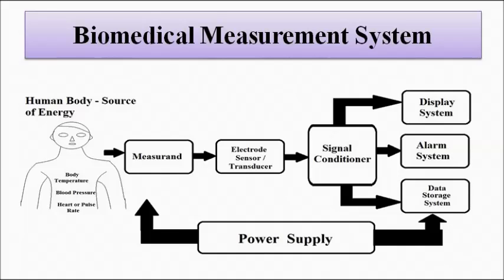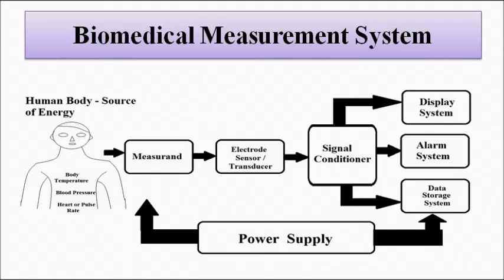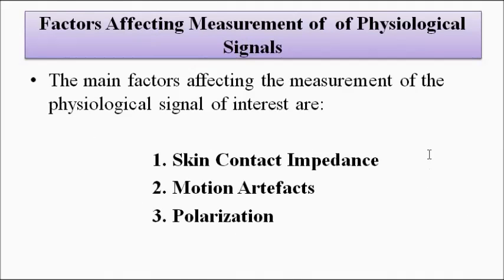Three factors come across in the measurement process which can affect or hamper it. Those three things are: first, the skin contact impedance; second, motion artifacts; and third, polarization. We will discuss each of these three things.